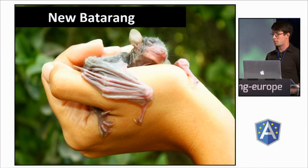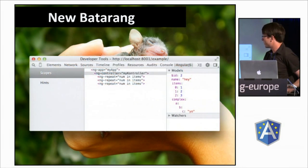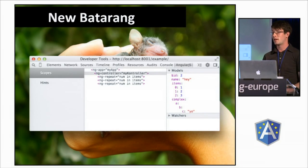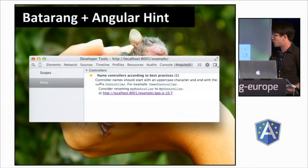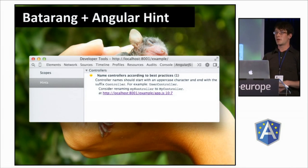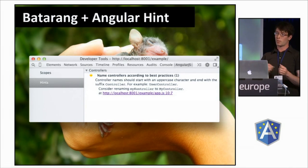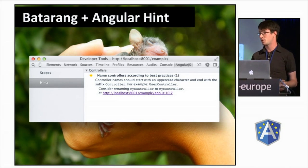There's a new Batarang. It's much simplified, it actually works this time, and it's fast. Check it out — it's on GitHub as well. The other cool thing about it is it integrates with Angular Hint. Rather than downloading the file and wiring it into your app, you can just do this and it'll find your app and give you all these hints.